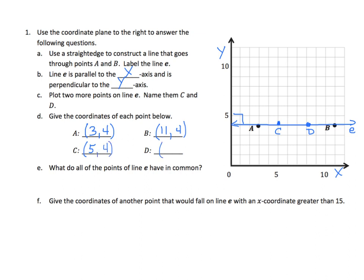And finally, D, we see that we have a value of 8 for x. And once again, the value for y is 4. What do all the points on line E have in common? They all have a value of 4 for y.